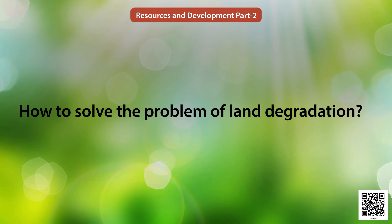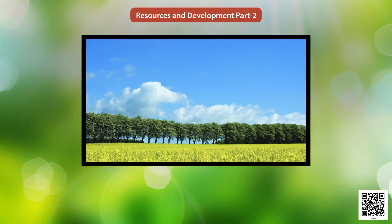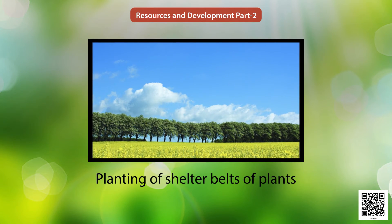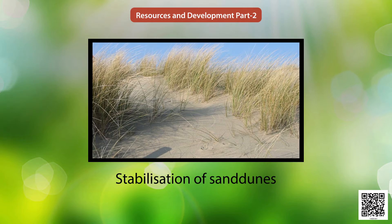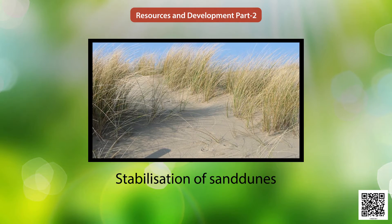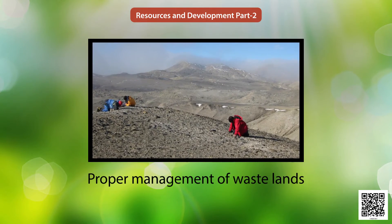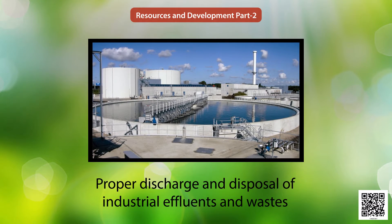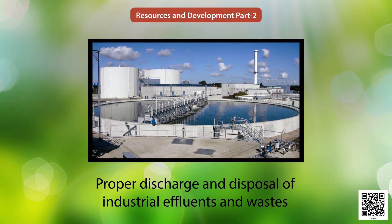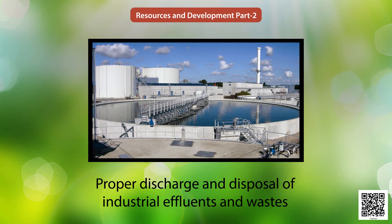How to solve the problem of land degradation? Afforestation and proper management of grazing can help to some extent. Plantation of shelter belts of plants, control on overgrazing, and stabilization of sand dunes by growing thorny bushes are some methods to check land degradation in arid areas. Proper management of waste, control of mining activities, proper discharge and disposal of industrial effluent and waste after treatment can reduce land and water degradation in industrial and suburban areas.